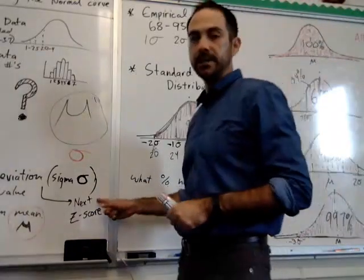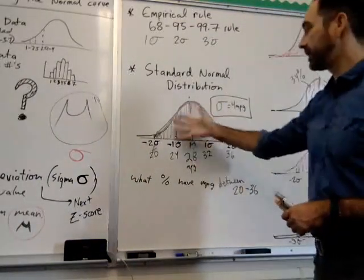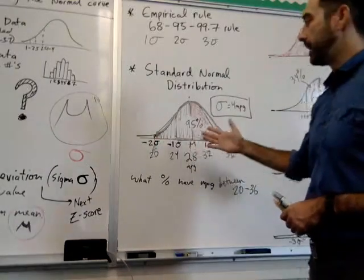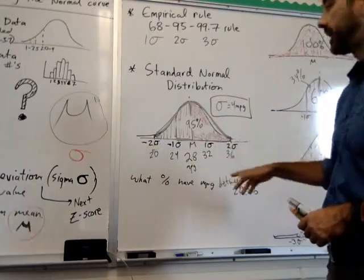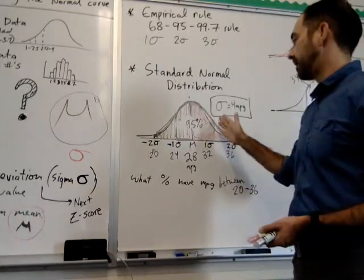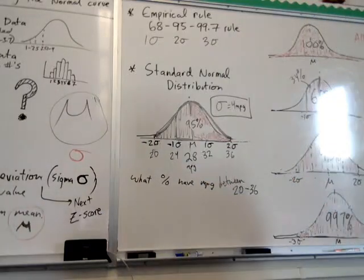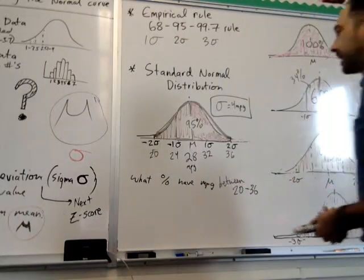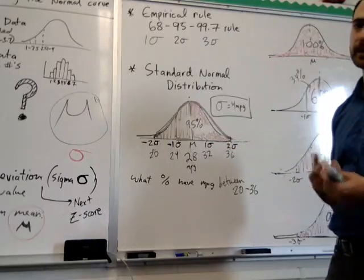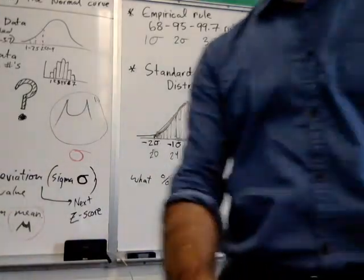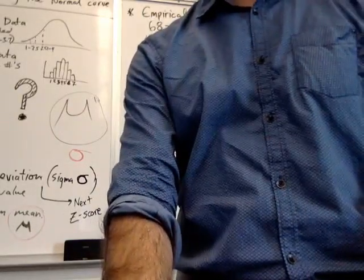The next step is going to be the z-score, which we're going to do today. The z-score basically allows us to find the percentage of values included in our interval when we're not using whole values for our sigma — for example, from 1.25 sigma to negative 0.5 sigma. We're going to use a z-score chart to find percentages for sigma values that aren't whole numbers. Don't forget all the assignments are on Edmodo along with the keys posted later in the day.